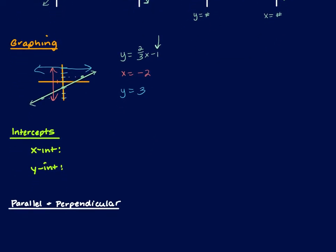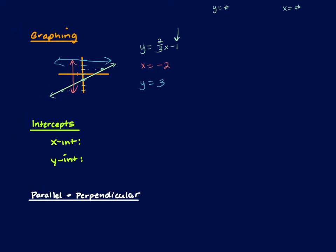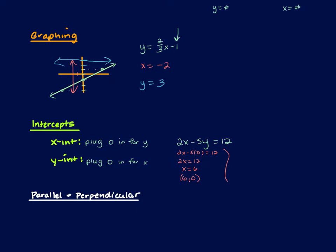Also in this section was intercepts. If I'm trying to find the x-intercept from an equation, I'm going to plug 0 in for y. If I'm trying to find the y-intercept, I'm going to plug 0 in for x. So using 2x minus 5y equals 12: for the x-intercept, plug in 0 for y, get 2x equals 12, so x equals 6, giving the point (6, 0). For the y-intercept, plug in 0 for x, get negative 5y equals 12, so y equals negative 12/5, giving the point (0, -12/5).